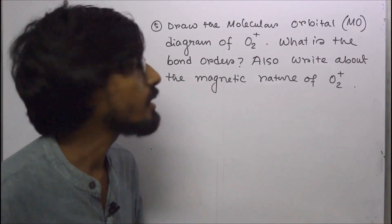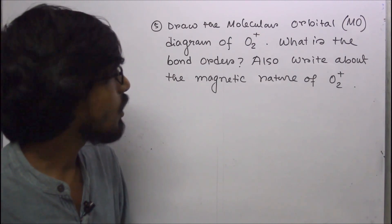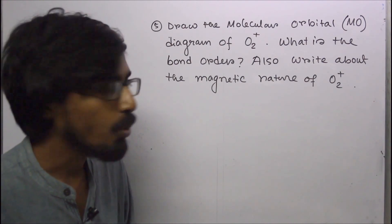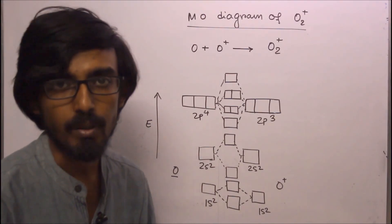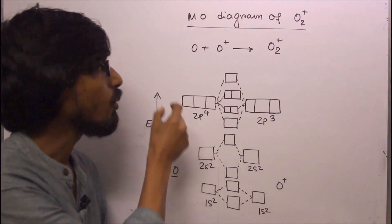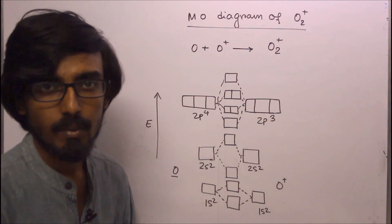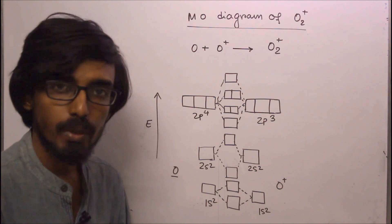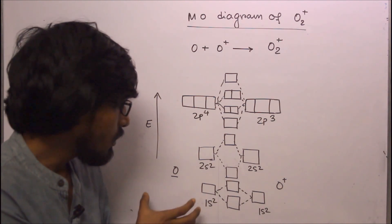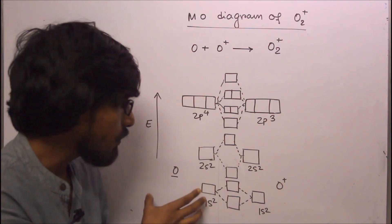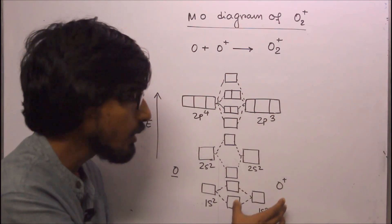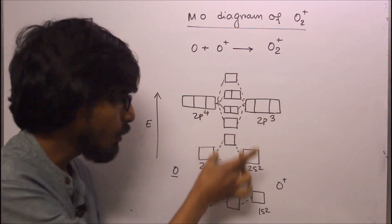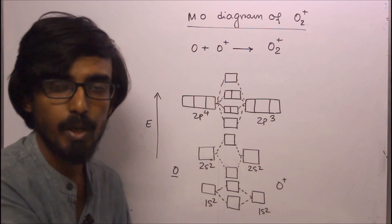Next question: draw the molecular orbital diagram of O2+, state its bond order, and describe its magnetic nature. O2+ is formed from O and O+. We use the MO diagram pattern for an O2-type molecule, with atomic orbital diagrams for O and O+ on either side and the MO diagram of O2+ in the center.